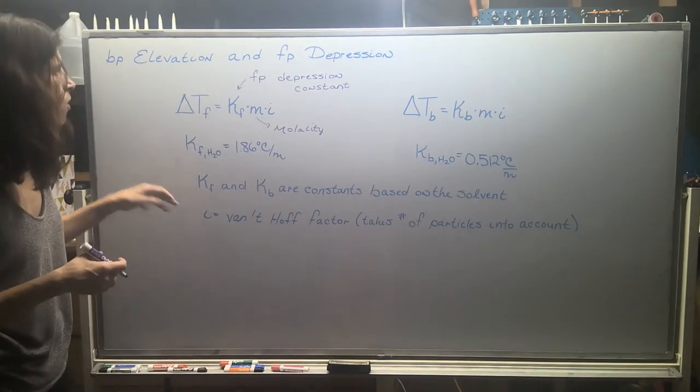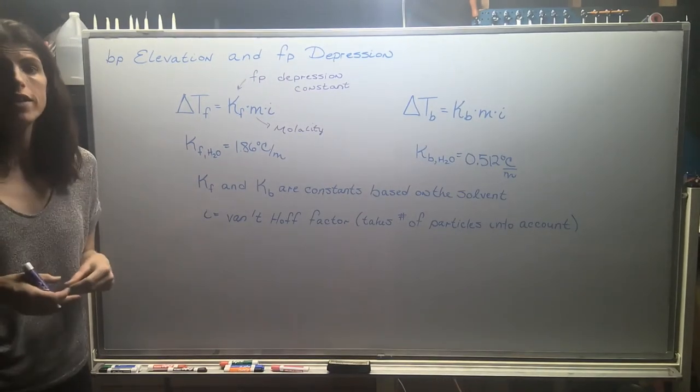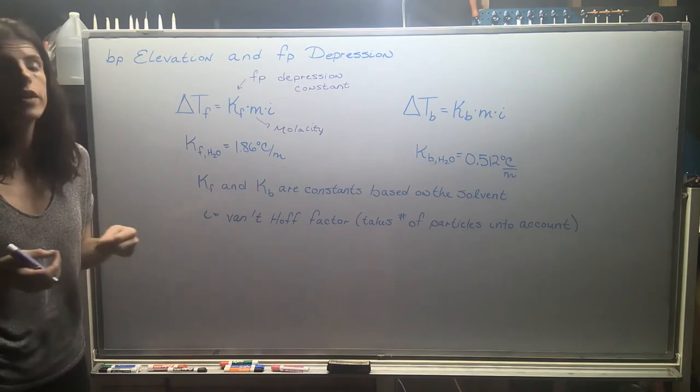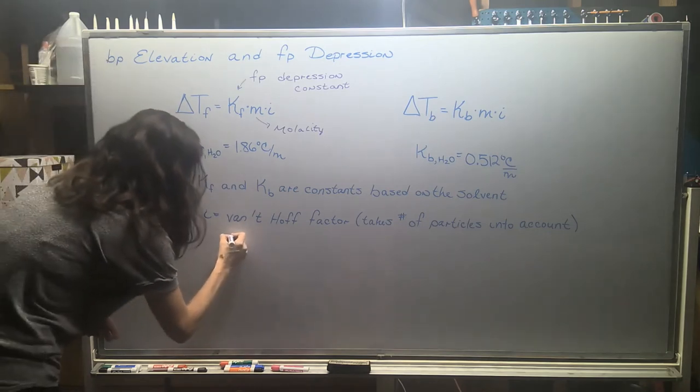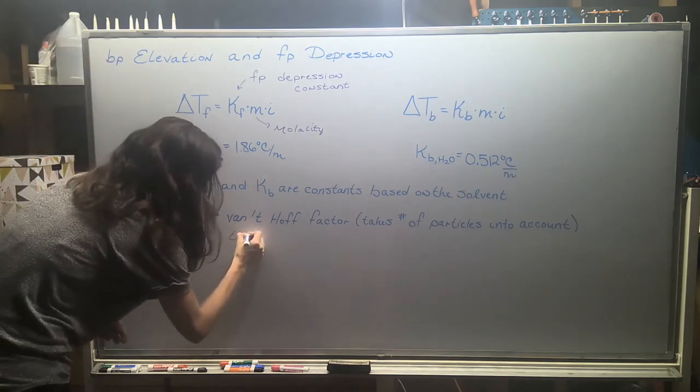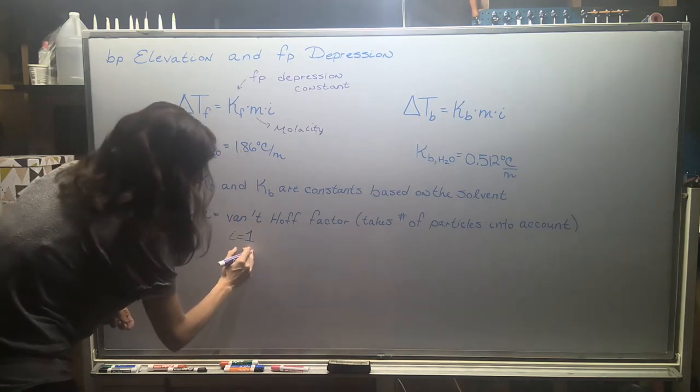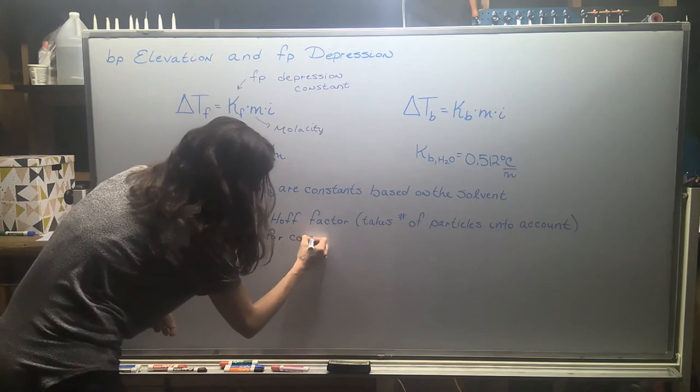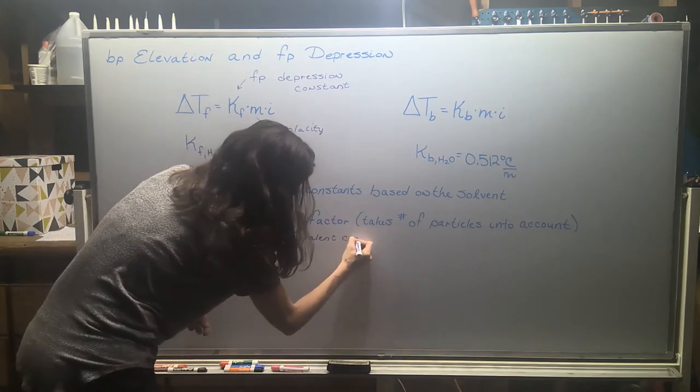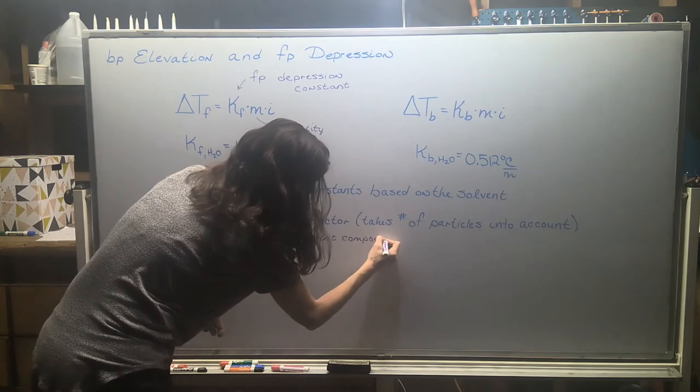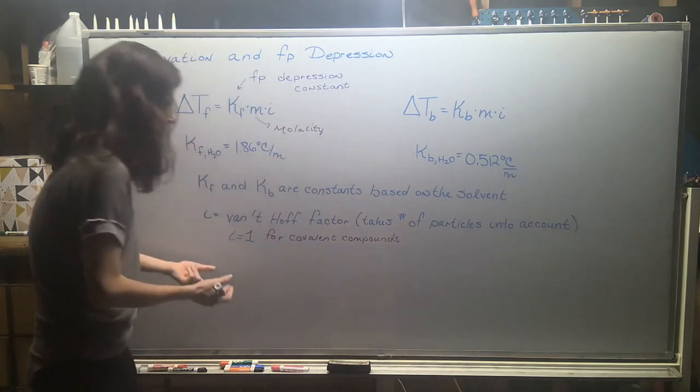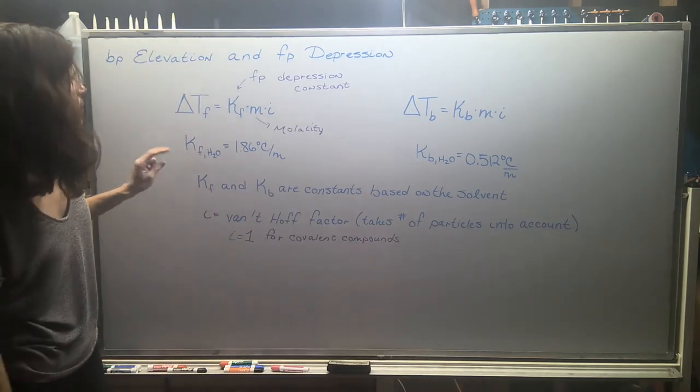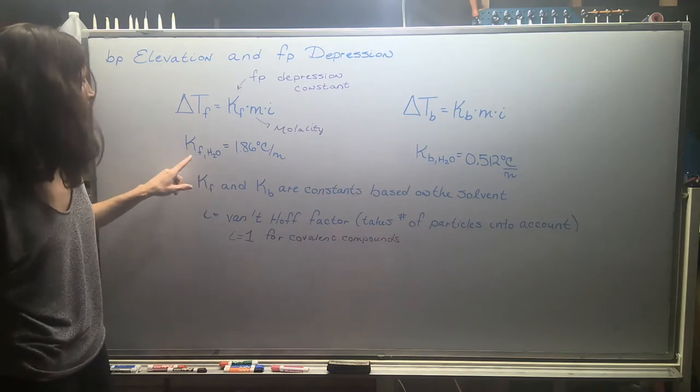I is what's known as the Van't Hoff factor. It takes the number of particles into account and we're going to go into more details about that. We need to think about particles because we know ionic compounds are going to break into multiple pieces, multiple ions when they dissolve. For now, a lot of the earlier problems deal with covalent substances, covalent compounds. So the thing to know for now and for later, I equals one for covalent compounds. They don't break apart.